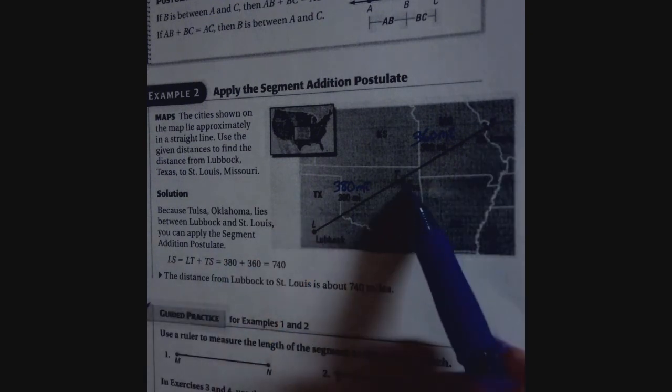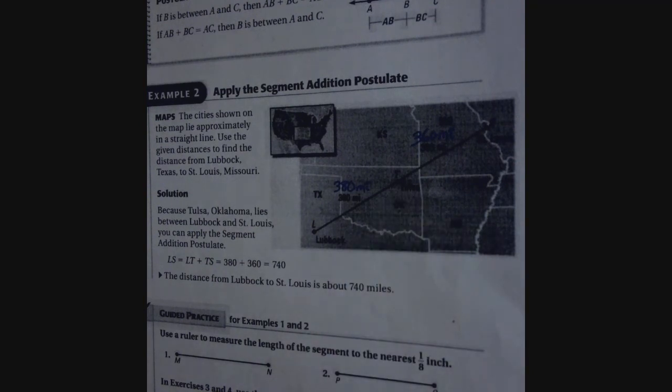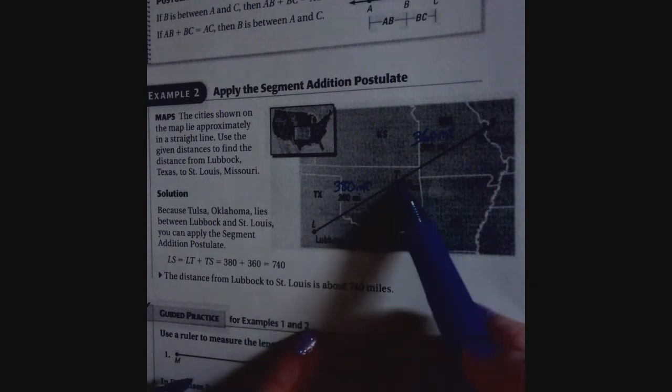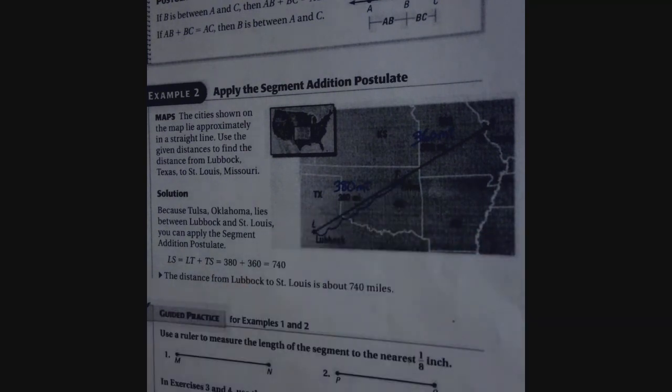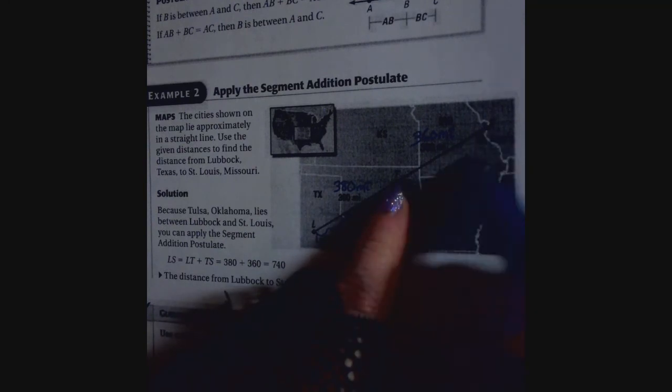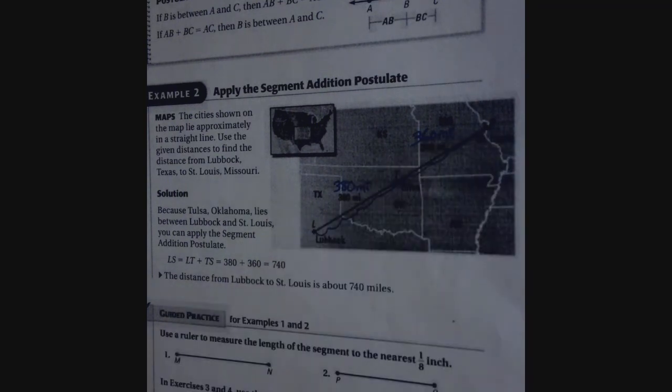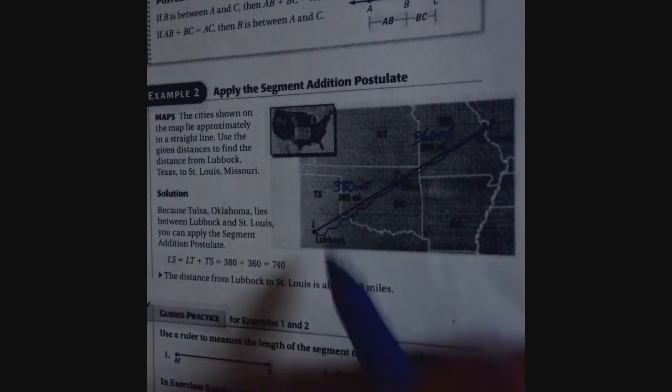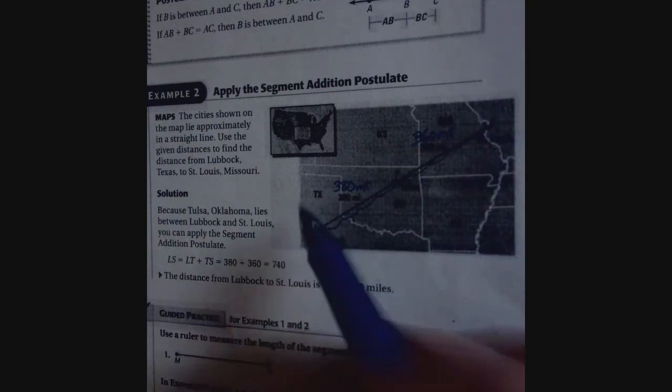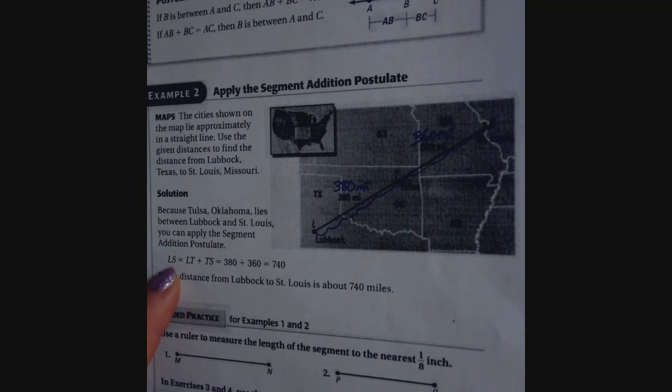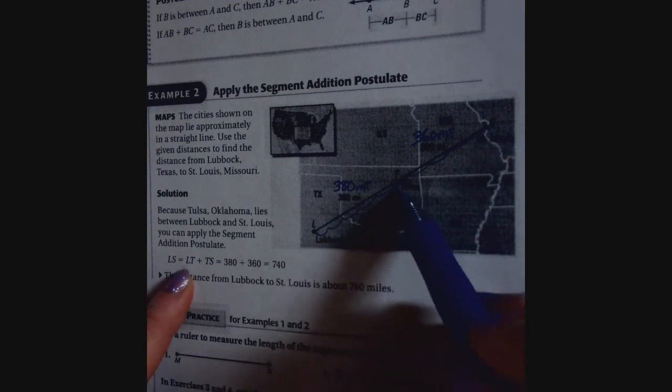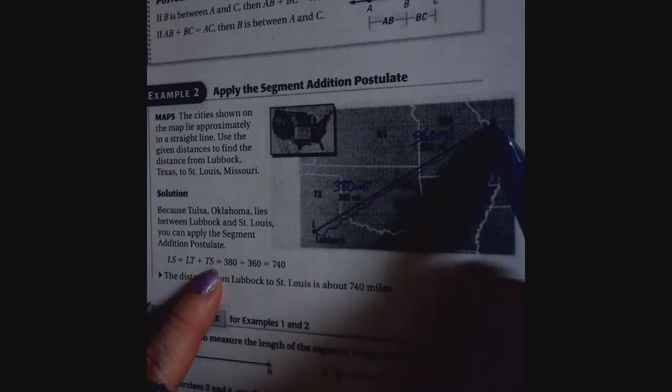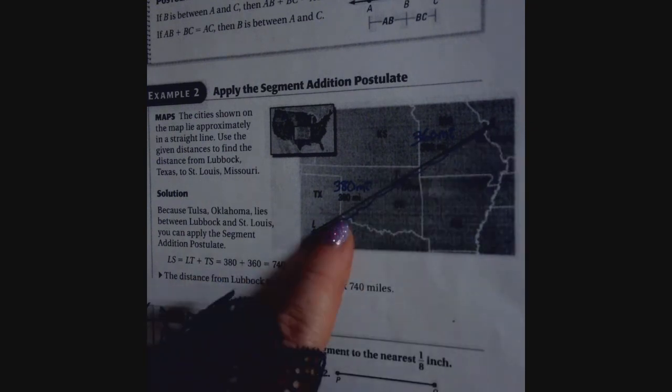And you can see that they put Tulsa, Oklahoma right in the middle. So they're showing you how to use the segment addition postulate. The fact that you have this in the middle, and you know the distance between Lubbock and Tulsa, I wrote here, is 380 miles. Then from T to S, from Tulsa to St. Louis, this part is 360. So the total from Lubbock, Texas to St. Louis is going to be LS. So you can find it by saying the total from Lubbock to St. Louis, from L to S, is LT from Lubbock to Tulsa, Oklahoma, plus from Tulsa, Oklahoma to St. Louis.